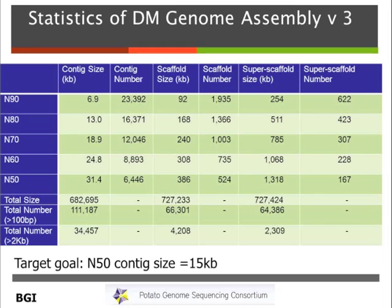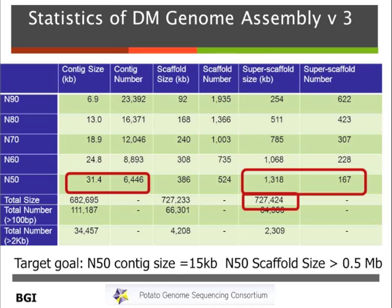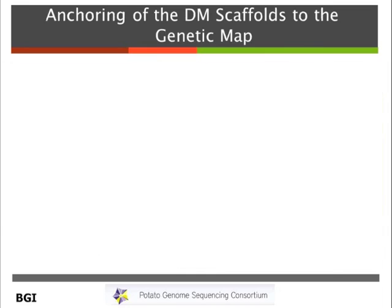The statistics for version 3 of the assembly: we were targeting an N50 contig size of 15 kilobases and achieved 31 kilobases — a pretty reasonable contig size, given that the average gene is less than 5 kilobases, so full genes will be captured on contigs. The N50 scaffold size target was half a megabase, and we ended up with 1.3 megabase scaffolds. The total representation of the assembly is 727 megabases — so part of the genome is missing. Most of what's missing is the heterochromatin in the centromere; while we're missing some genes due to gaps, the bulk of missing sequence is repetitive sequences in the potato genome.